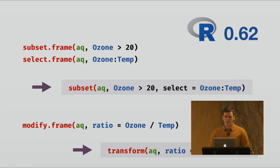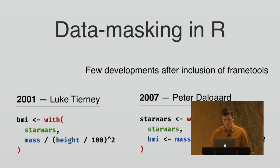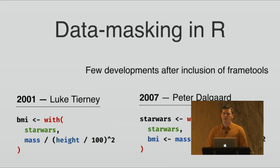These were integrated in R. Subset and select were merged into one single function, and modify became transform. Then there were relatively few developments on data masking in base R.